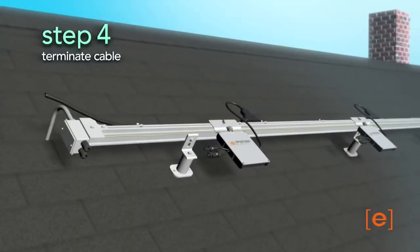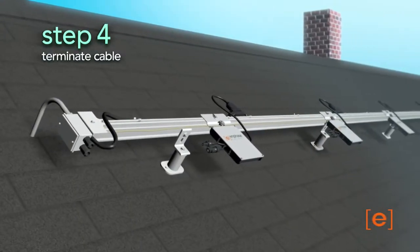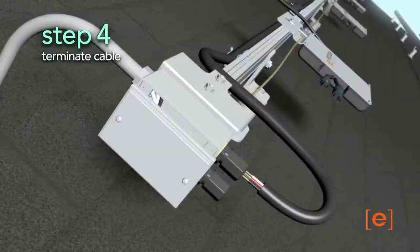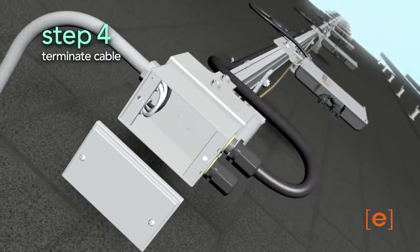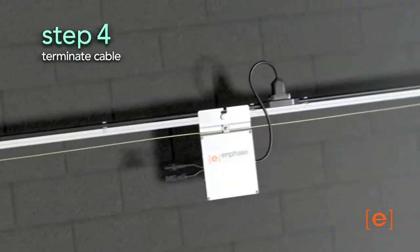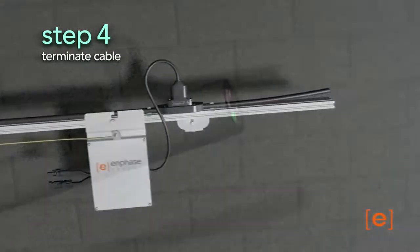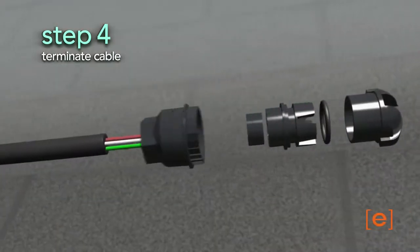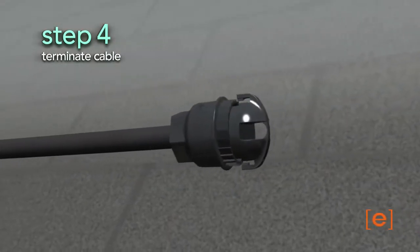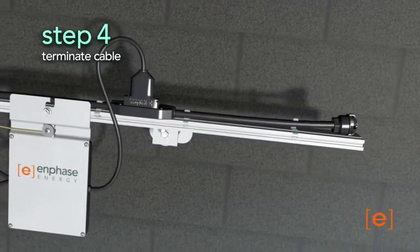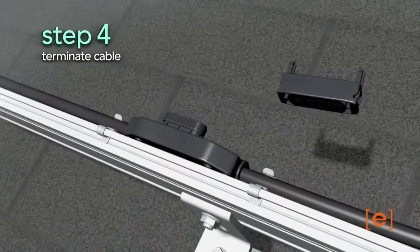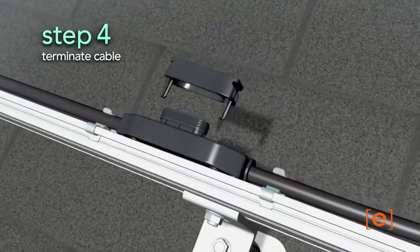Terminate the ends of the cables. Connect one end of the trunk cable to the junction box. The other end of the trunk cable must be terminated using a termination cap. Unused connectors must be covered using the caps provided.